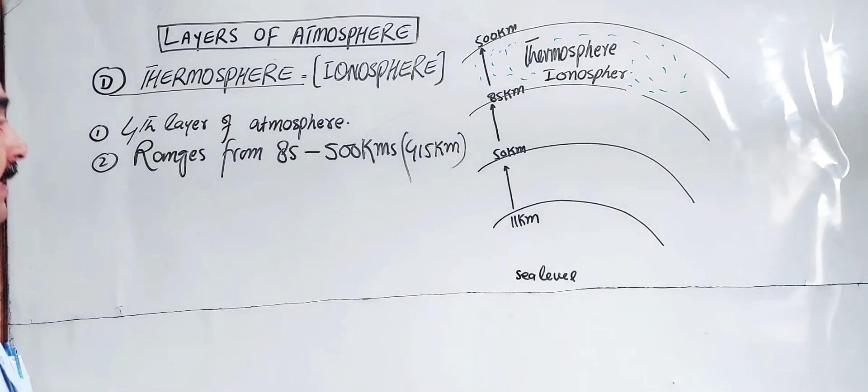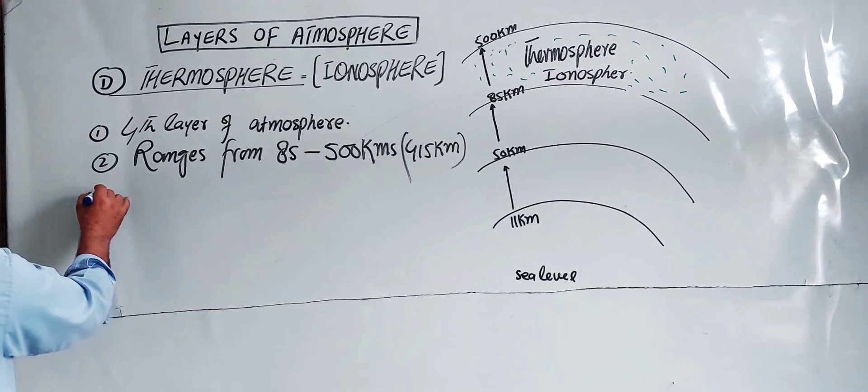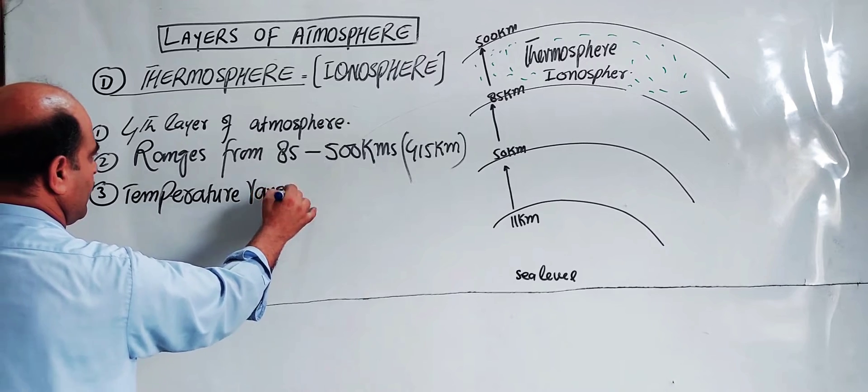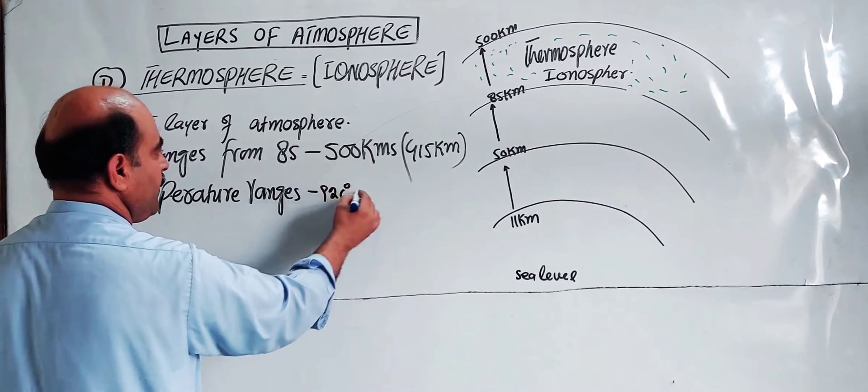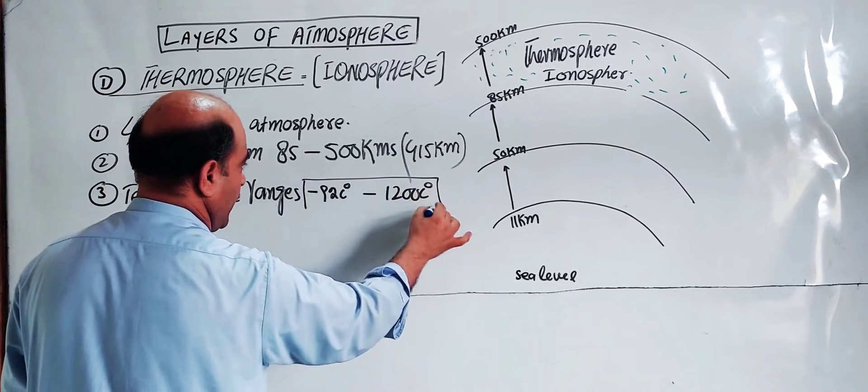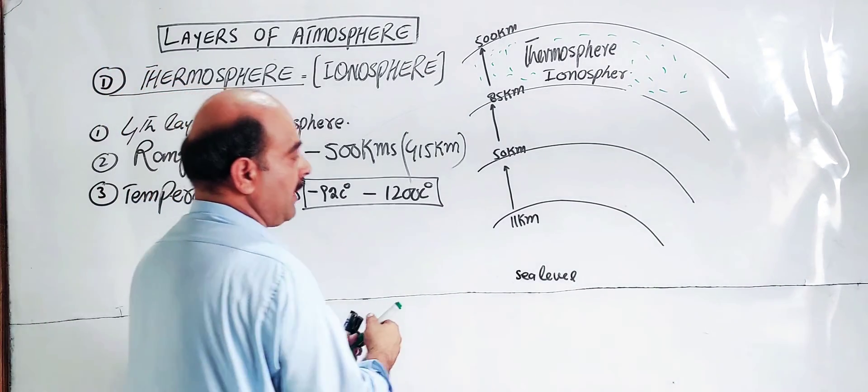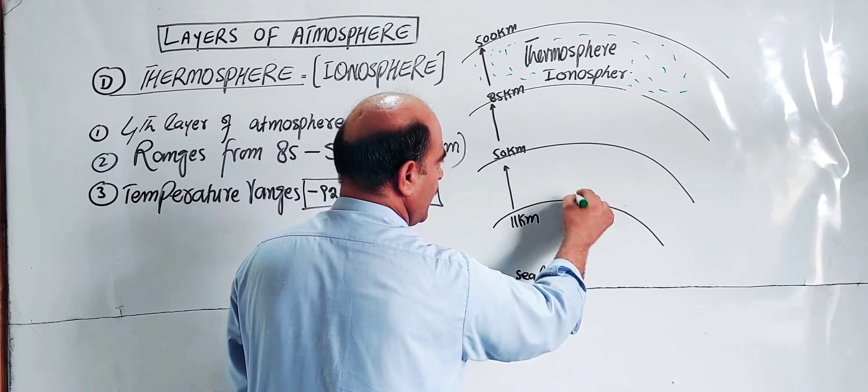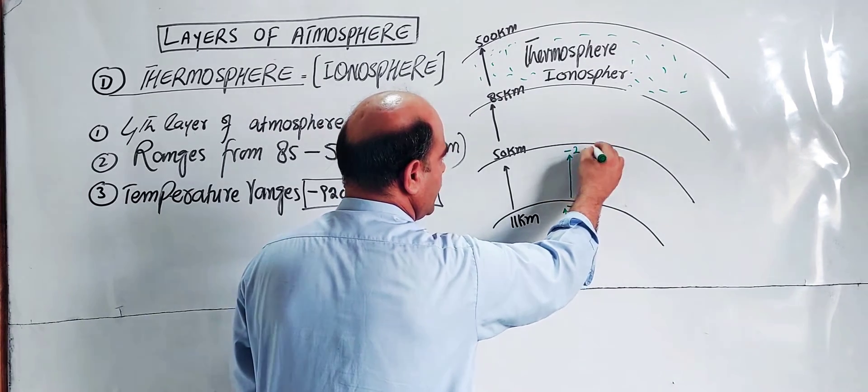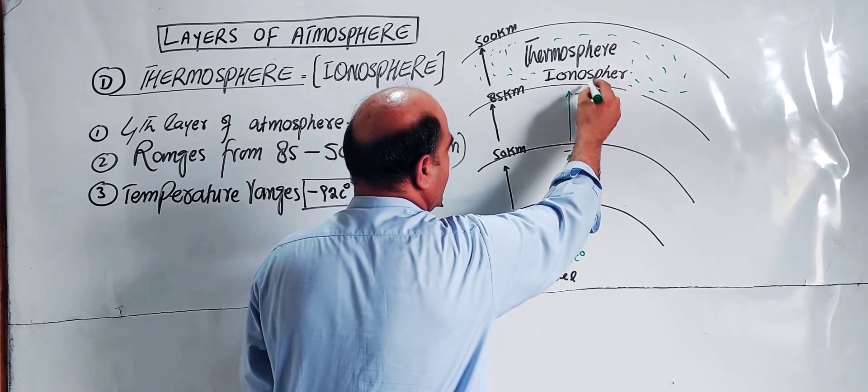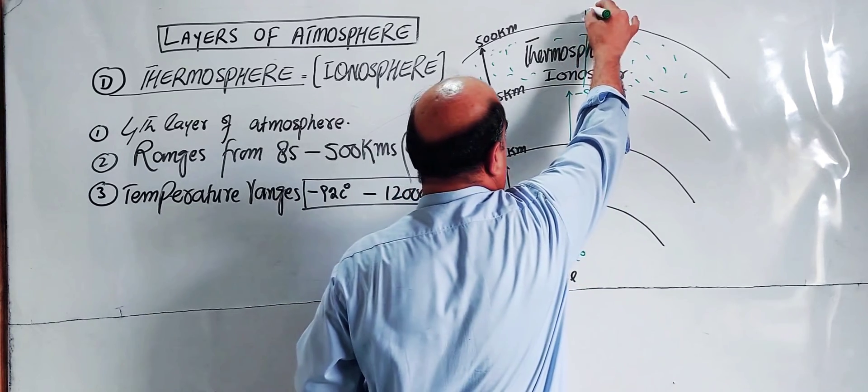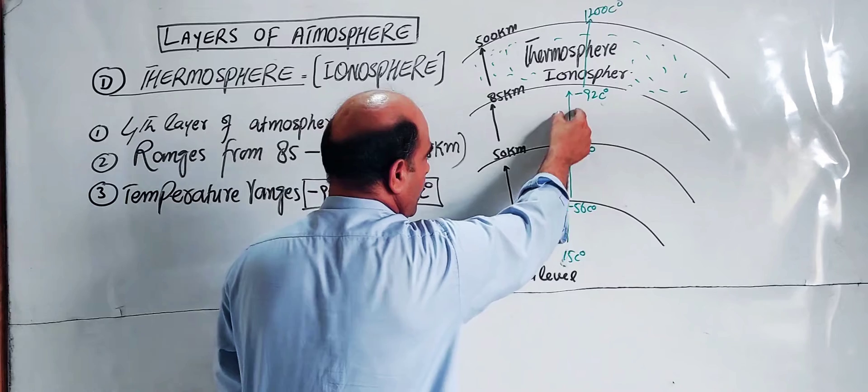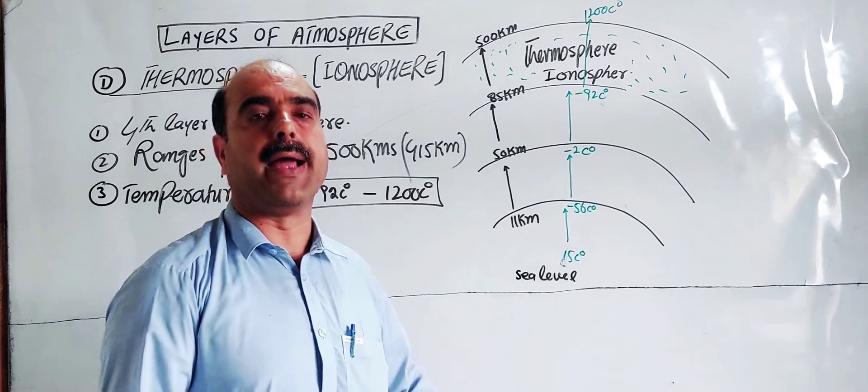Temperature ranges from minus 92 degrees C to 1200 degrees C. At the bottom of the mesosphere, the temperature is minus 92 degrees C. Now in the thermosphere, the temperature can increase and increase due to light radiation absorbing species.